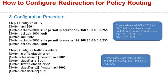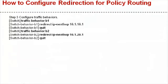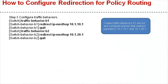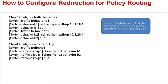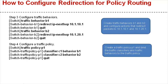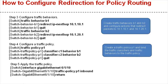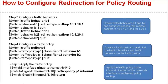Step 3: Configure traffic behaviors. Create traffic behaviors B1 and B2, and configure actions that redirect packets to 10.1.10.1 and 10.1.20.1. Step 4: Configure a traffic policy. Create traffic policy P1 and bind the traffic classifiers and traffic behaviors to the policy. Step 5: Apply the traffic policy to the inbound direction of the user-side interface to implement policy routing.